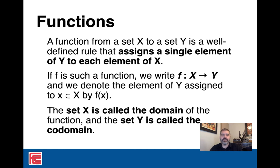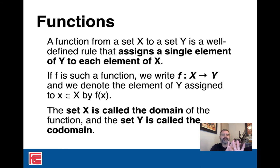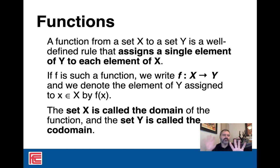We would say that a function from set X to set Y is a well-defined rule that assigns a single element of Y to each element of X. If I have two sets, X and Y, I get a mapping of relationships between the values in X to the values in Y. For every element of X, I assign or map a relationship to a single value in Y. We write that as f mapping set X to set Y.